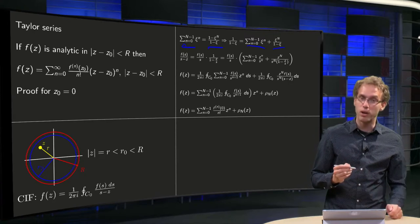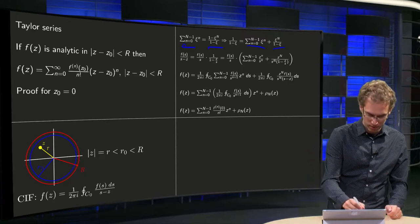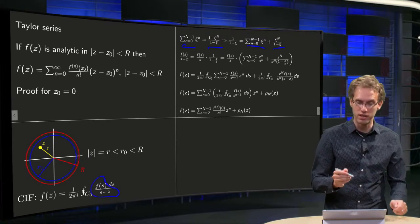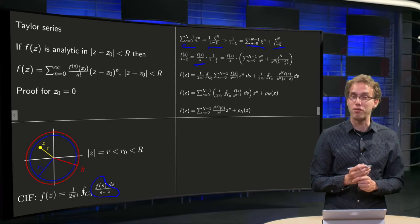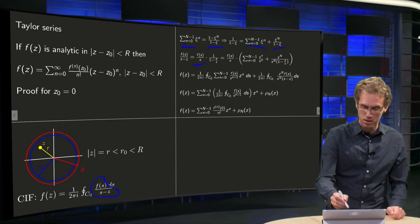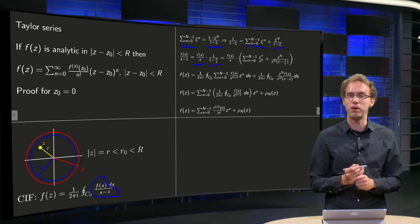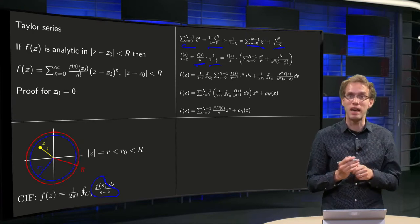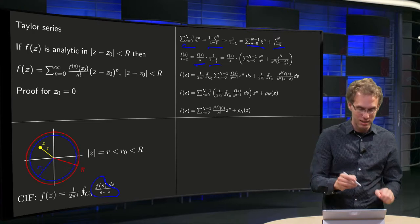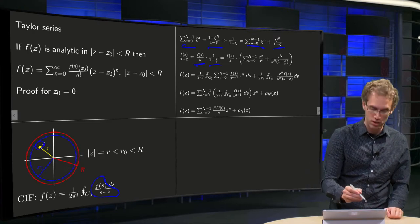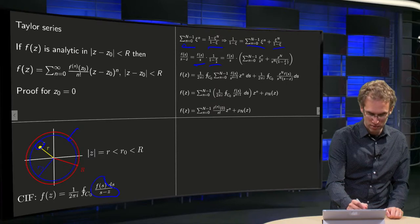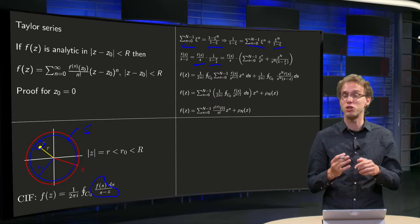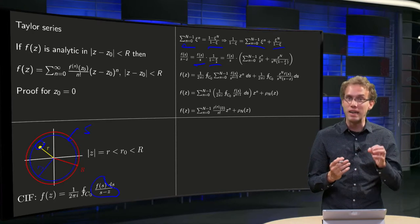Well, now we rewrite f of s divided by s minus z as f of s divided by s times 1 over 1 minus z over s. Why do we do that? Our z is living here inside our circle, and the s is living on the blue circle. So the norm of z over s will be something smaller than 1, and that is important.